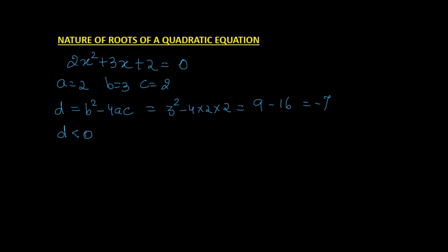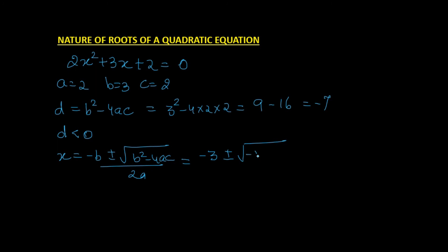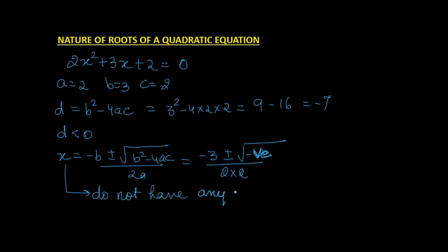Applying the quadratic formula: x = (−3 ± √(−7)) / (2·2). Since D is negative, we have a negative value under the square root. We cannot find the square root of a negative number, so we cannot find the values of x. Our x does not have any real value — in other words, x has no real solution.